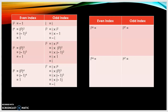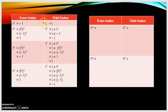We can divide examples into two cases: one is even index and the other is odd index. We have one method for even index and another method for odd index.